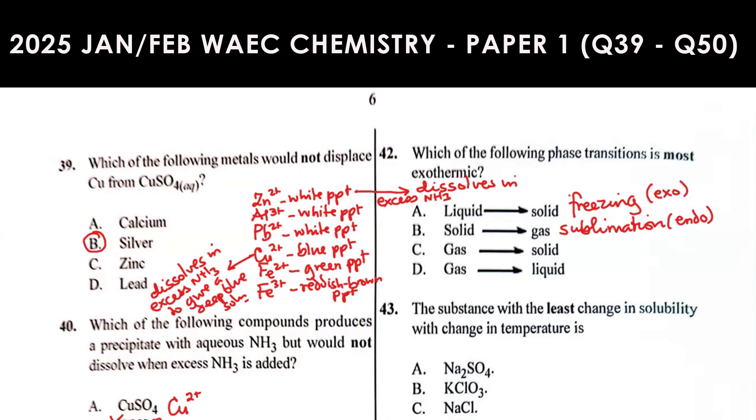Gas to solid is the reverse of sublimation, some call it de-sublimation. This is the reverse of this, so it's exothermic. Gas to liquid is condensation. Heat is released. The most exothermic is when a substance is changing from gas to solid. That is where the greatest amount of heat will be released, which makes C the answer.